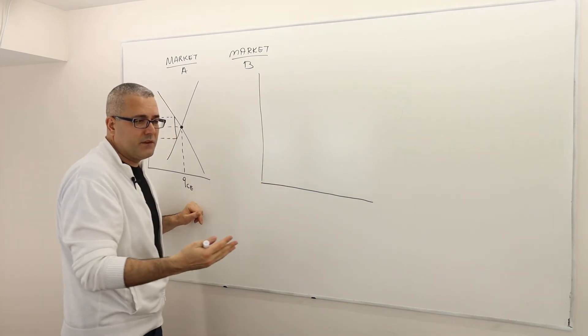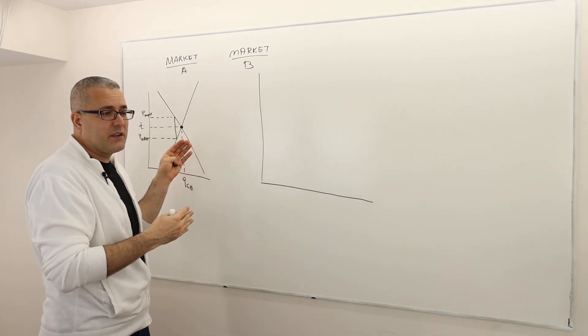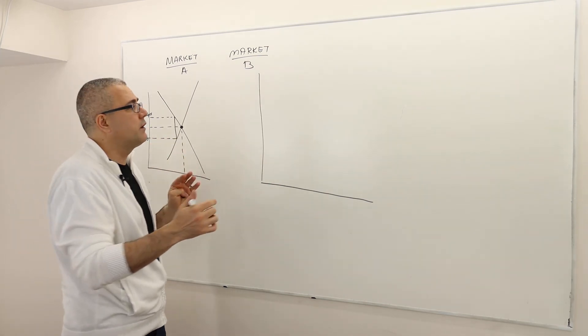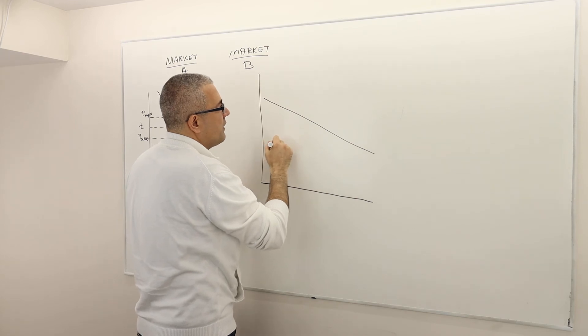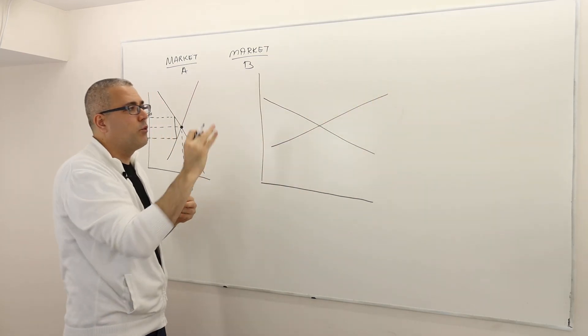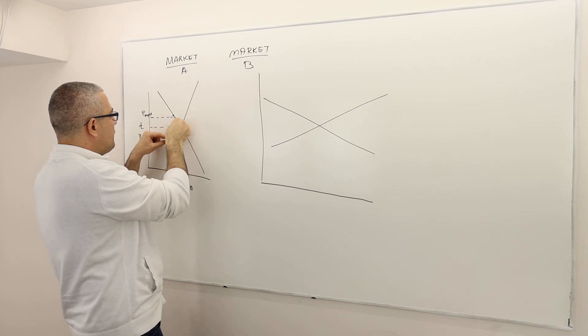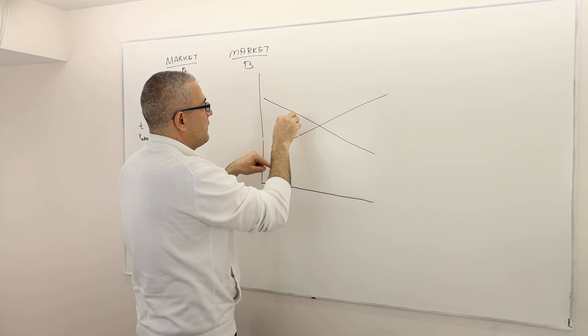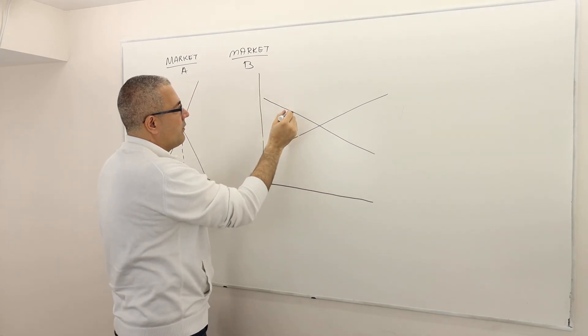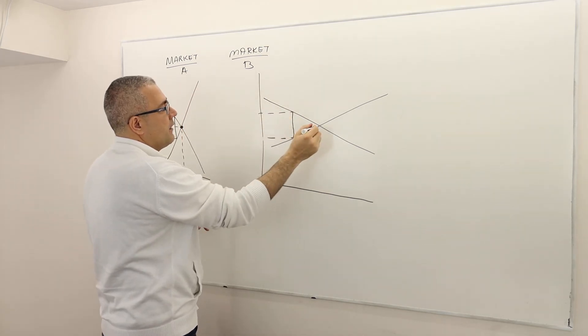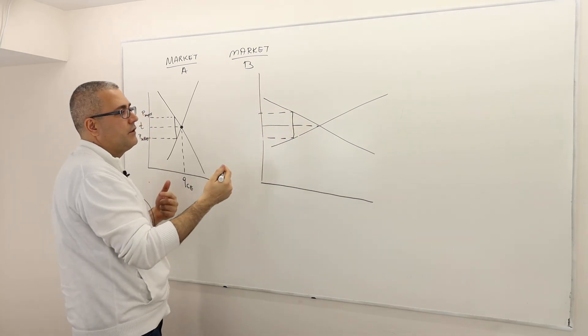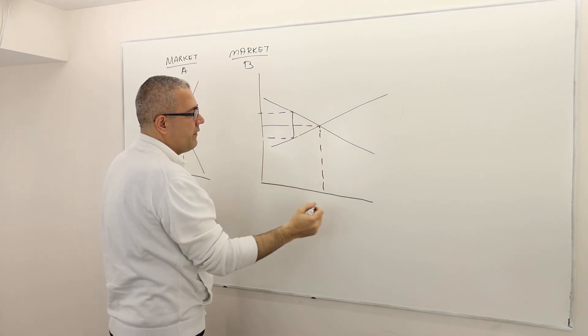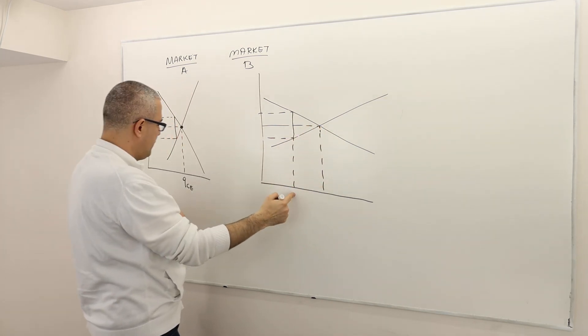But here the opposite happens in a sense. The same tax will have only a small effect on the price consumers pay, but it will largely affect the equilibrium quantity. So it seems like both the supply and the demand curves are more elastic in this case, because once you sort of fix the size of the tax, something like this, what happens is that the price difference for consumers is not too much, but the quantity variation is significant.